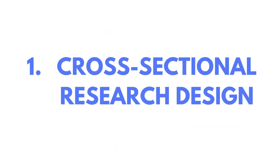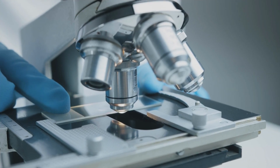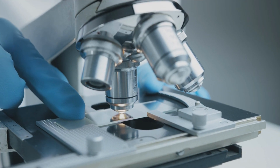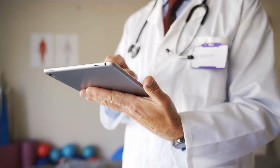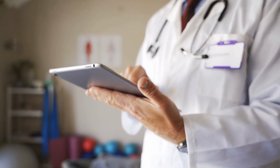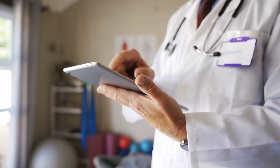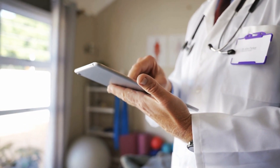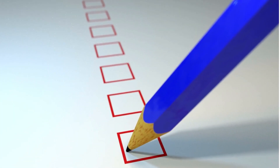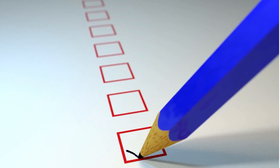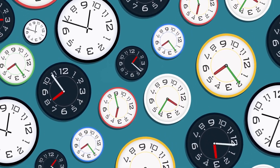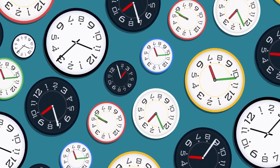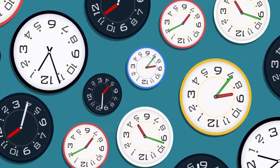The first is cross-sectional design. Cross-sectional design involves studying a sample at a single point in time. It aims to capture data from different groups or individuals and analyze the existing relationships or characteristics. For example, conducting a survey to understand the attitudes of different age groups towards climate change. Please note, this type of study is limited to a specific period of time.